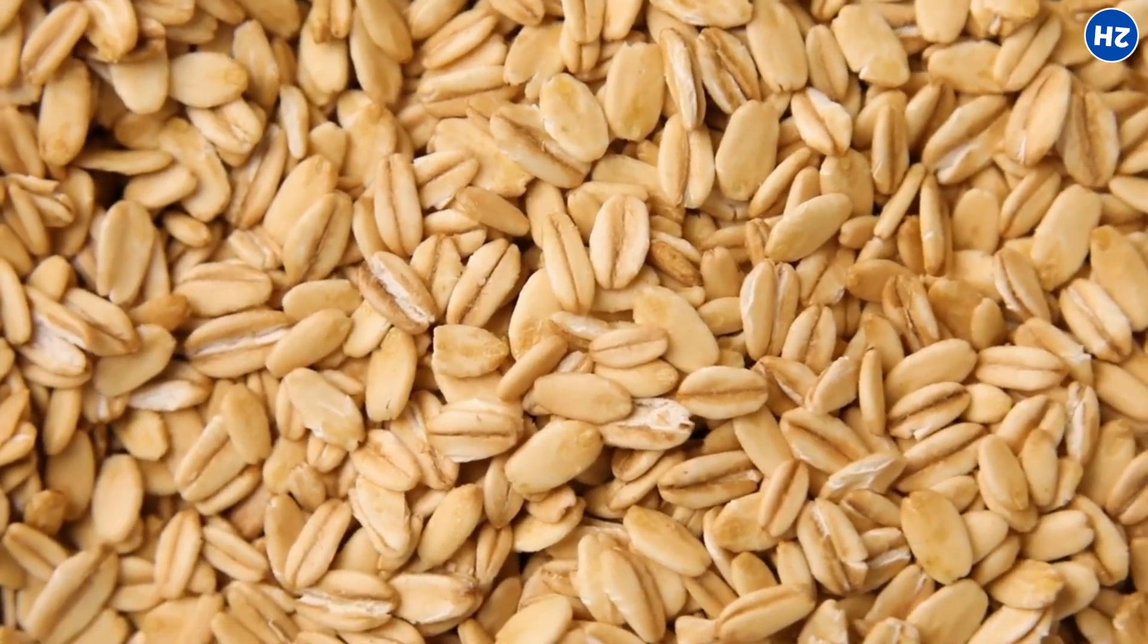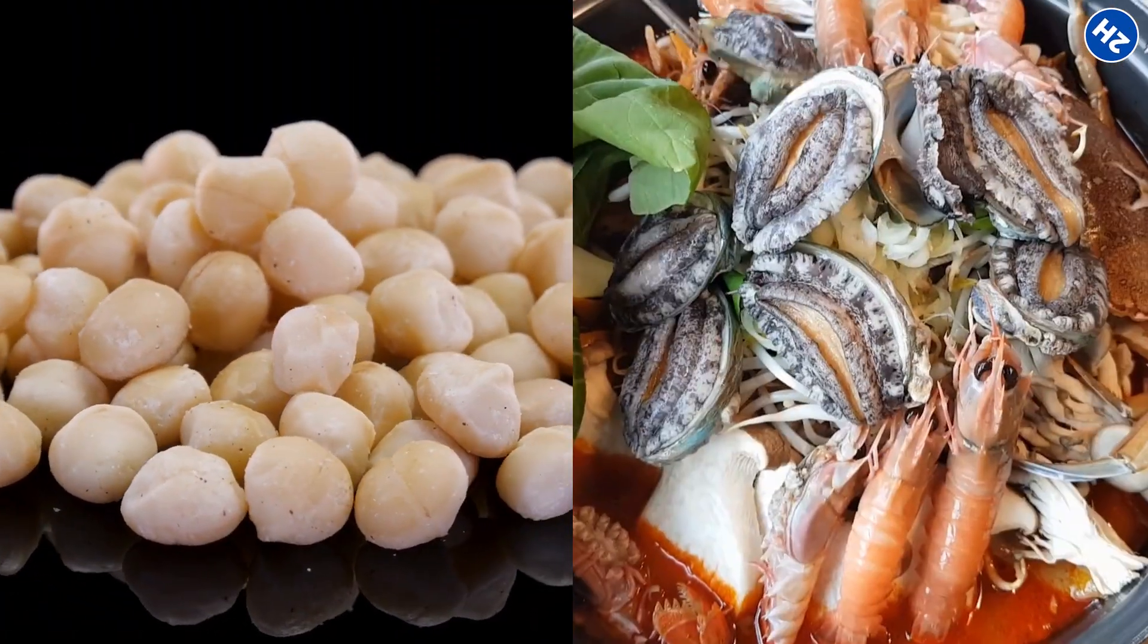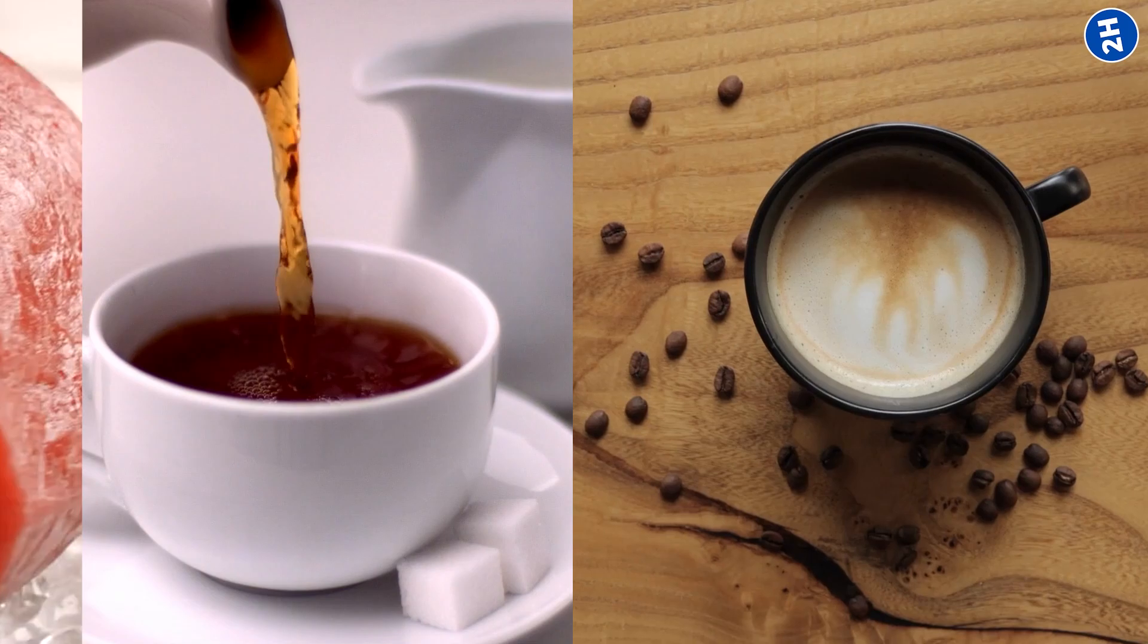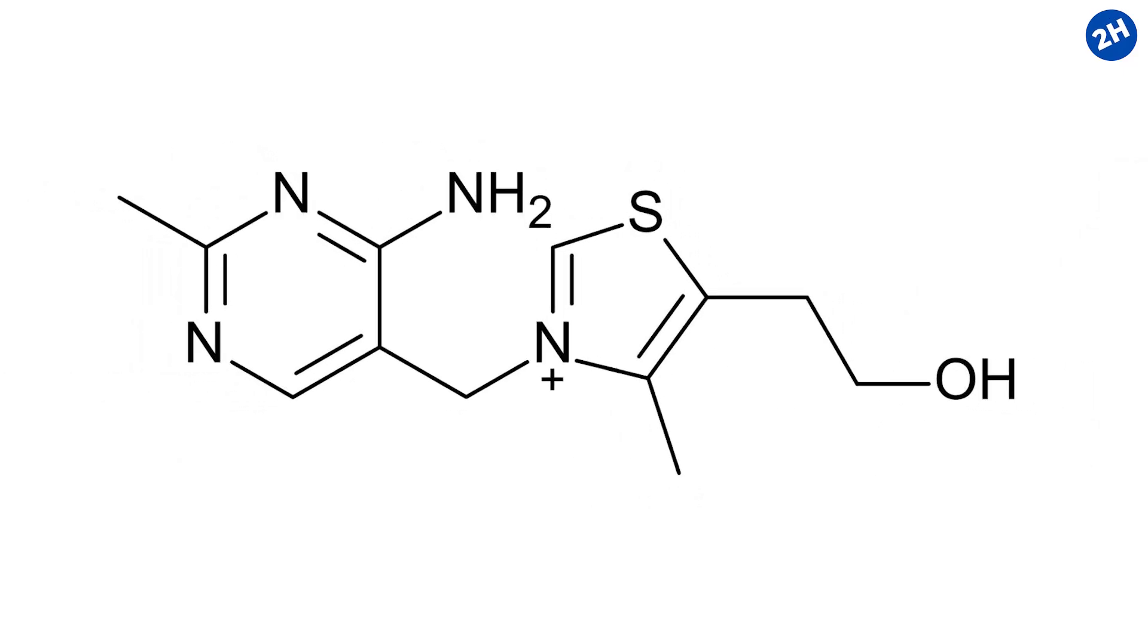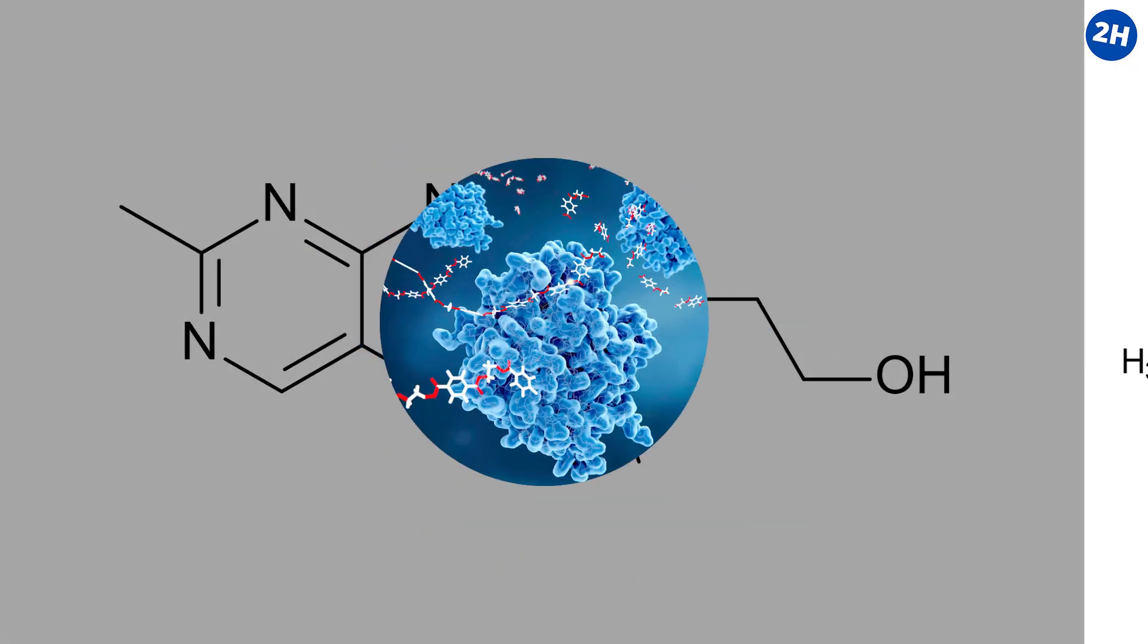Food sources include whole grains, pork, macadamia nuts, and seafood. Some foods like tea, coffee, and raw fish also decrease the level of thiamine, due to the presence of thiaminase, an enzyme that degrades thiamine.